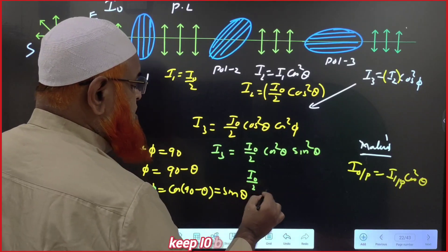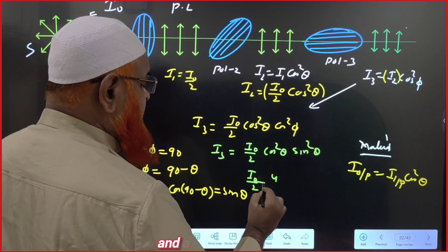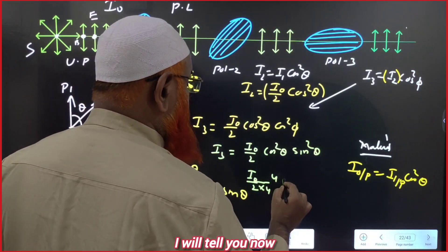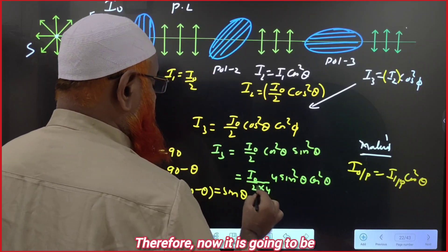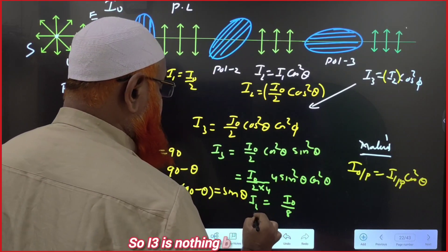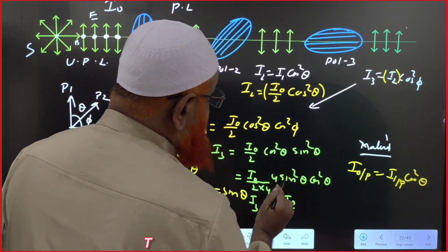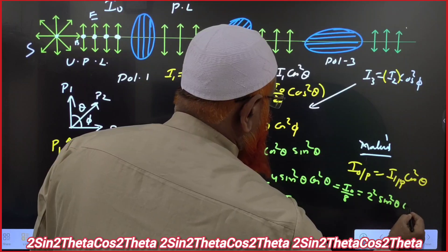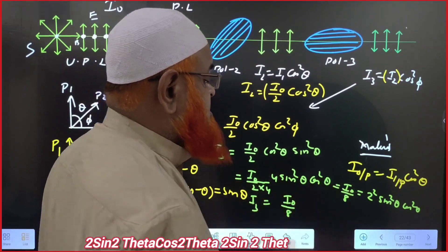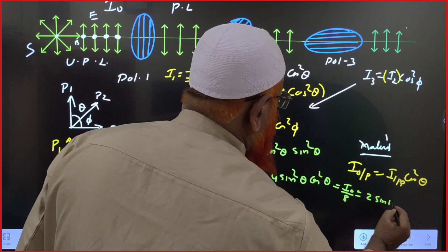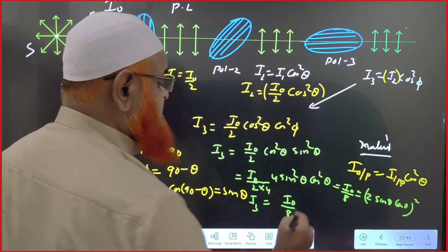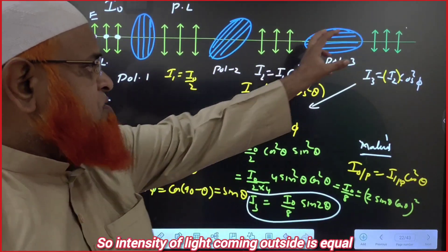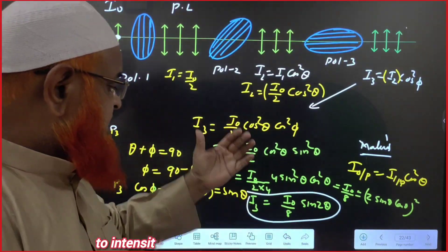Now simplifying I3 = (I0/2)·cos²θ·sin²θ. Multiply and divide by 4: I3 = (I0/8)·4·sin²θ·cos²θ = (I0/8)·(2sinθ cosθ)². Since 2sinθ cosθ = sin2θ, this becomes I3 = (I0/8)·sin²(2θ). This is the final equation: the intensity of light after three polarizers equals I0/8 multiplied by sin²(2θ).